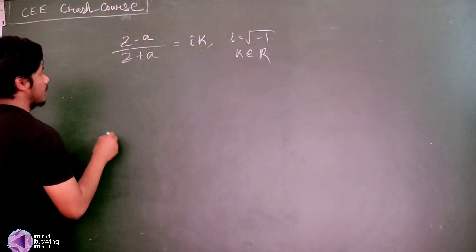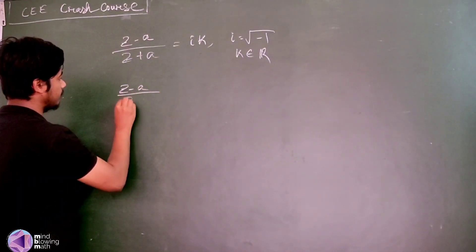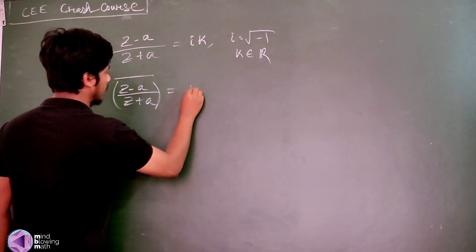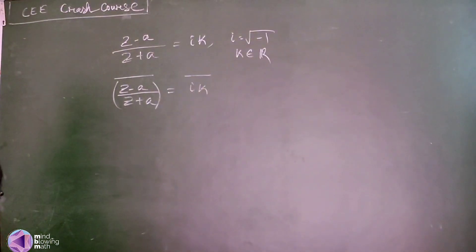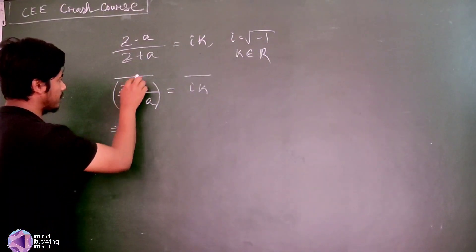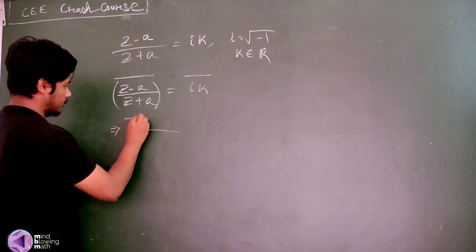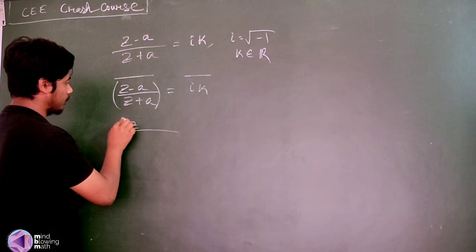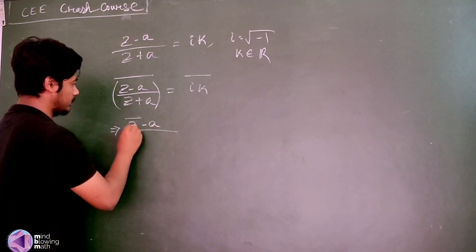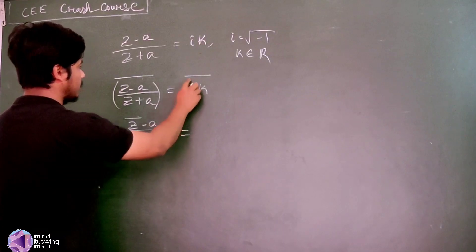What we have to do is take the conjugate of (z minus a) divided by (z plus a), and also set it equal to k.